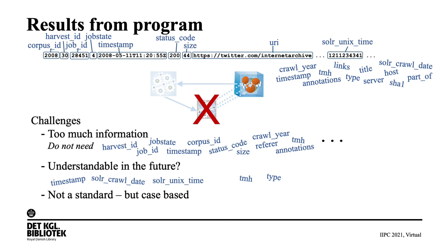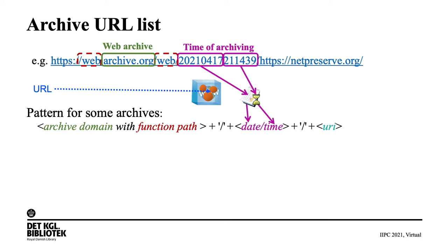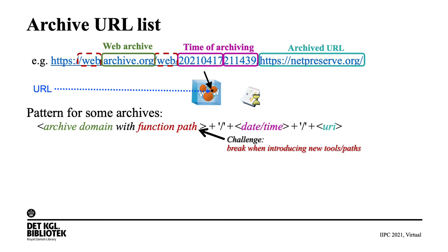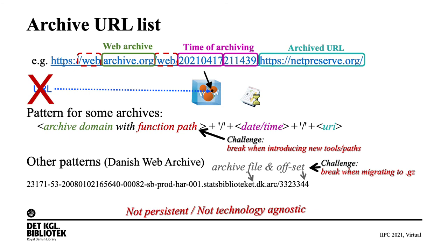If we look at archive URL lists, many archives have URLs with a part containing the web archive domain and some functional path, a part with the type of archiving, and a part with the archived URL. The challenge is that the first part has a tendency to change, which we have already seen for several web archives. It is even worse for the Danish web archive, where it uses an archive file name and offset. This is unfortunately not very persistent, which we experienced a few years back when we migrated to compressed files — the file name may be almost the same, but the offset certainly is not.